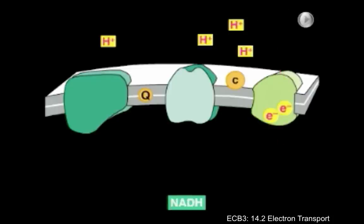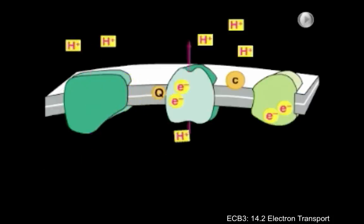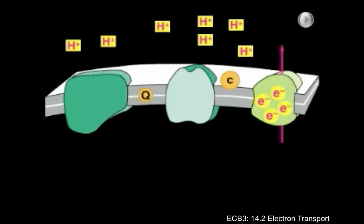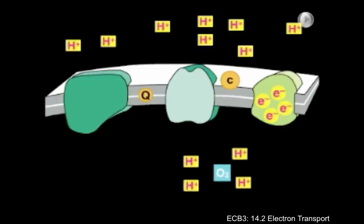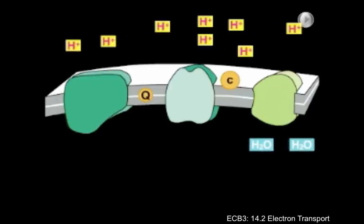Because each complex in the chain has a higher affinity for the electrons than the previous one, the electrons keep moving unidirectionally. Finally, cytochrome C delivers the electrons to the cytochrome oxidase complex, a third proton pump. The cycle repeats until the cytochrome oxidase complex has accumulated four electrons, which are then handed over to molecular oxygen. Oxygen takes up the electrons as it combines with protons, forming water, thereby completing the stepwise combustion of food molecules.